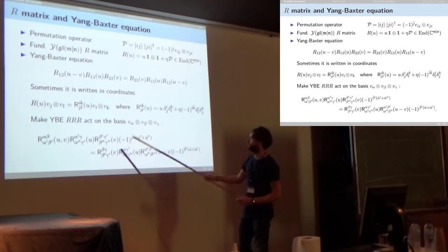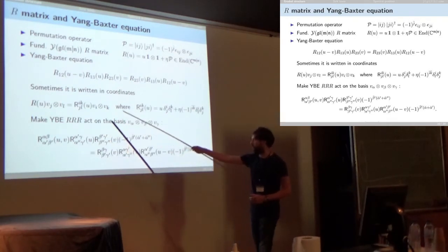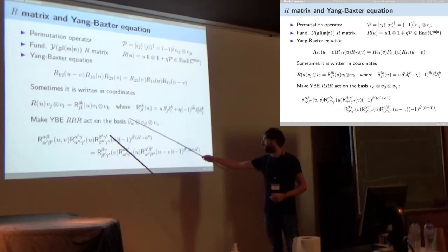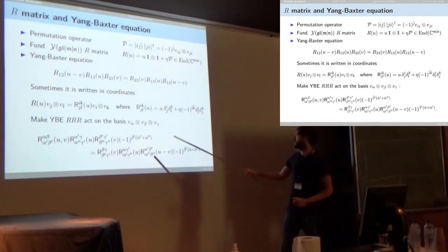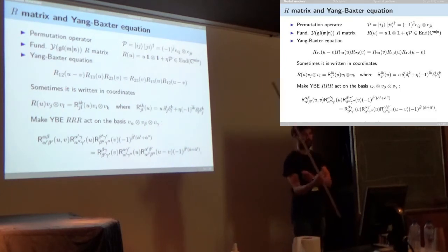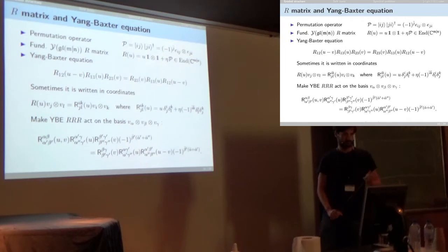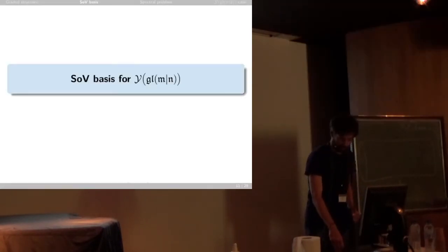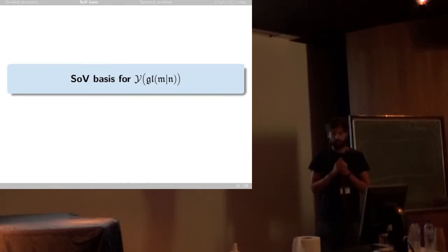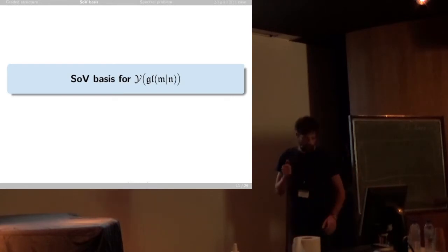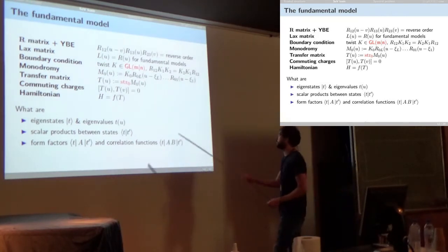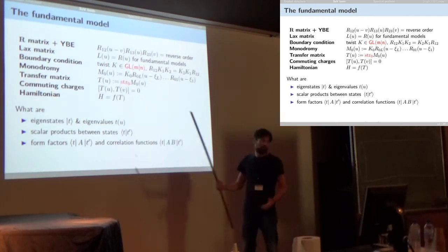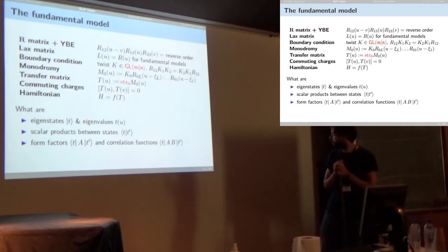We are now positioned to explain how the separated basis works for a graded model. The construction of the fundamental model is exactly the same as in the non-graded case, but you must take the twist in the GL(M|N) supergroup rather than the ordinary group, in order to preserve the Yang-Baxter equation, and you take the supertrace of the monodromy. The supertrace: if you write the monodromy operator as a block matrix in the auxiliary space with blocks A, B, C, D, the supertrace is the trace of A minus the trace of D.